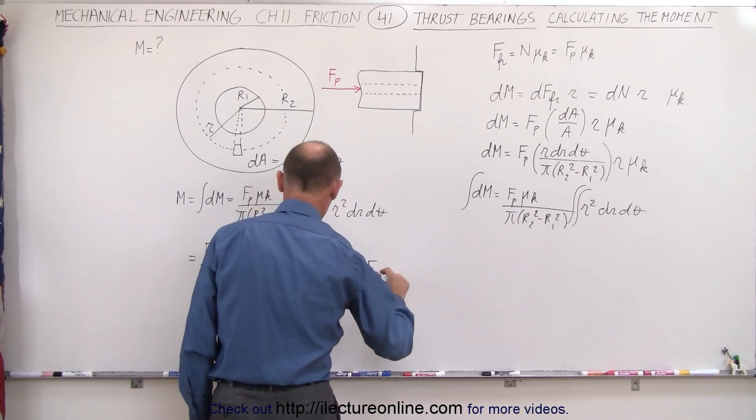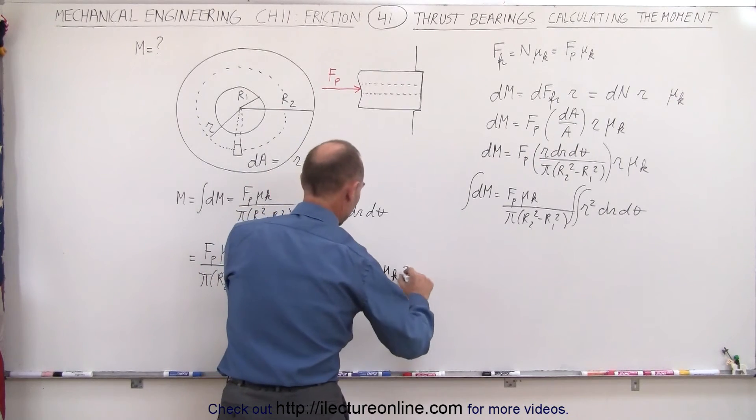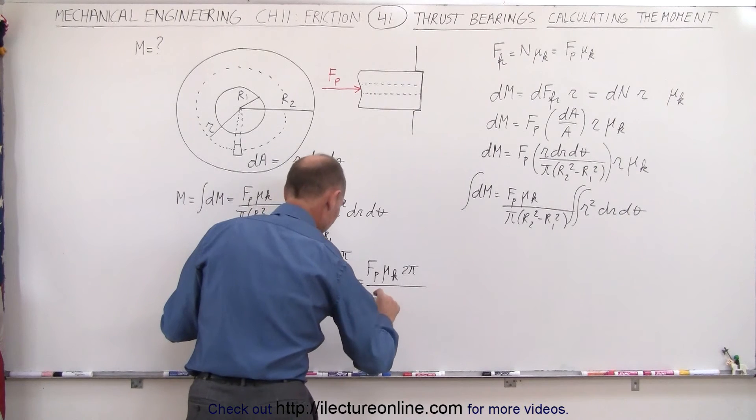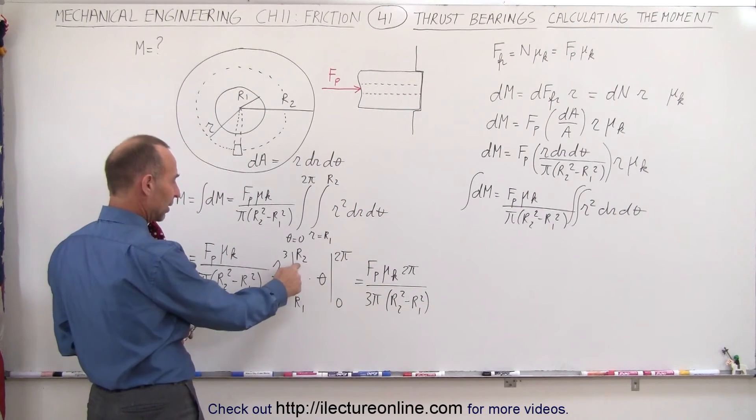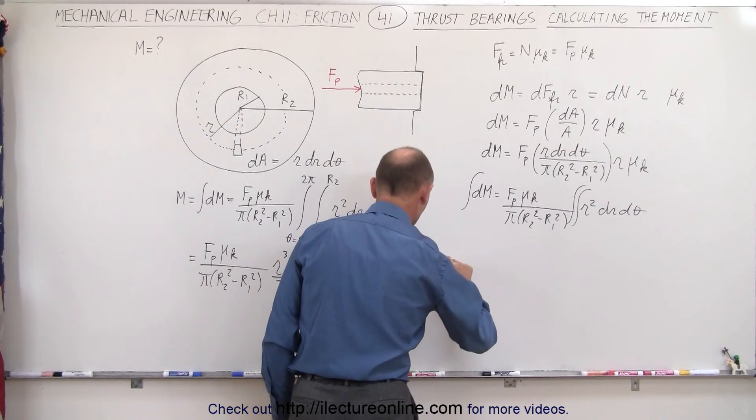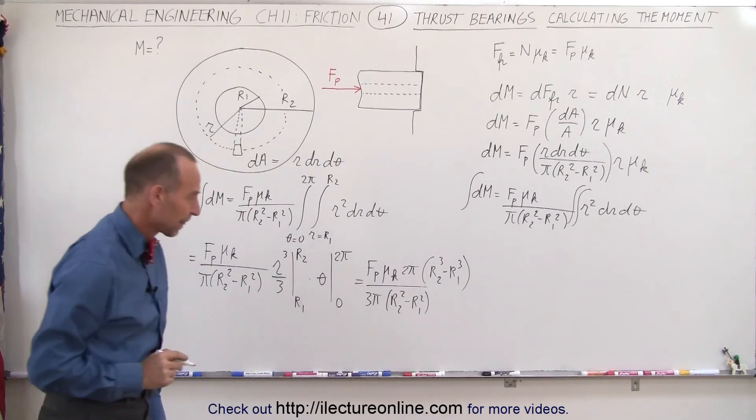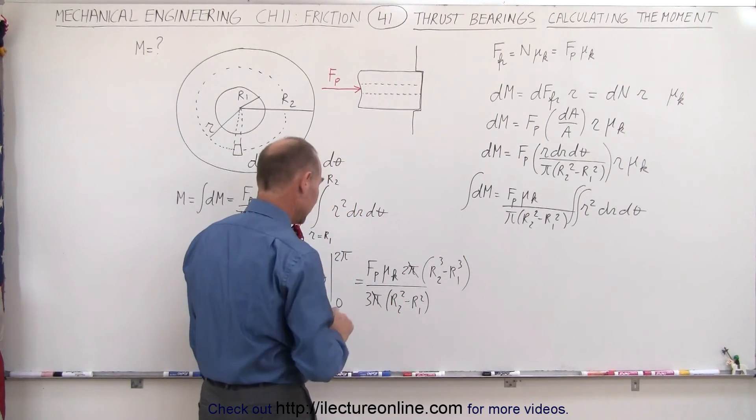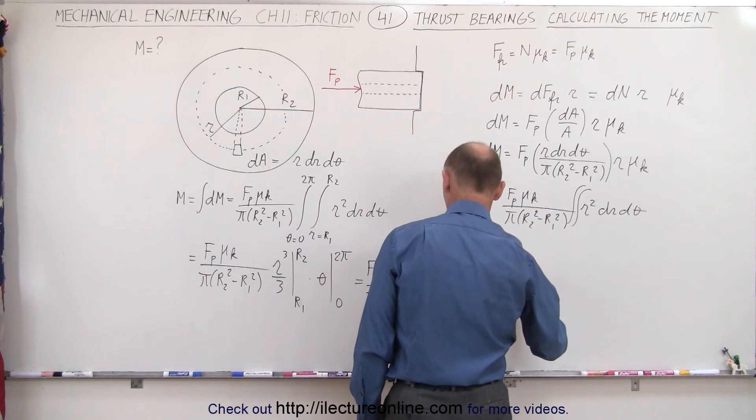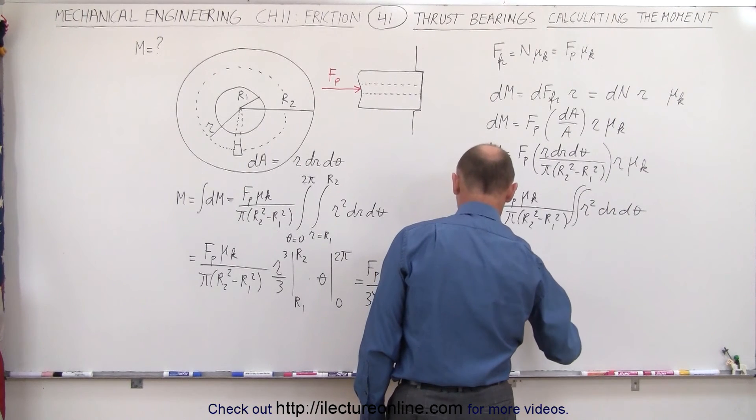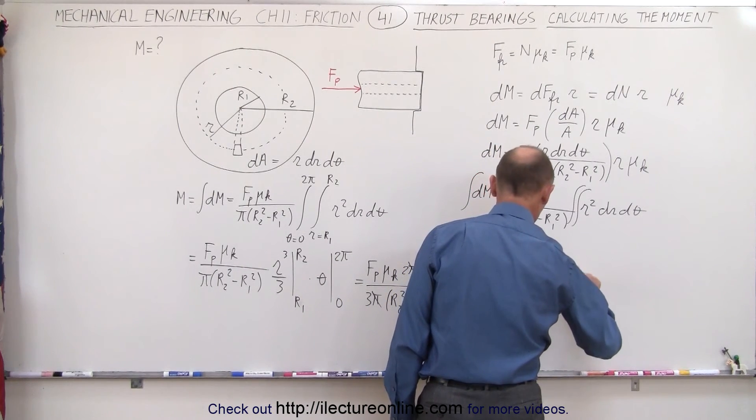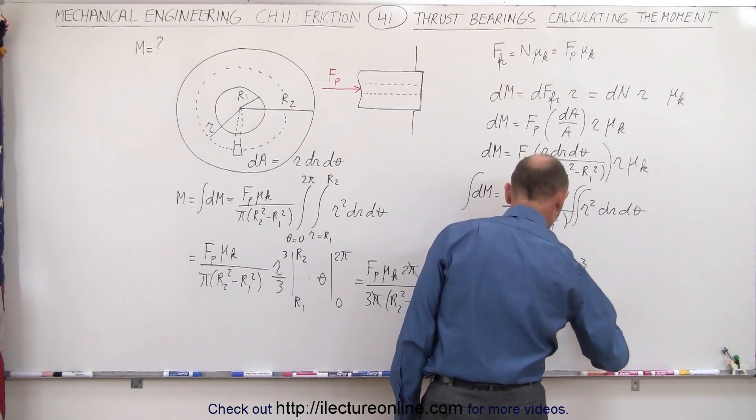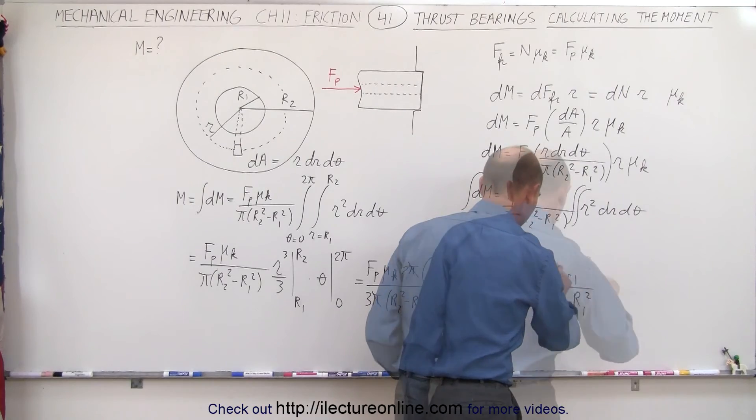We get f sub p mu sub k, we get a 2 pi in the numerator here, divided by, we get a 3 pi times r2 squared minus r1 squared. We have all that, and then I still have to plug in the upper lower limit for r cubed, so in the numerator we'll get r sub 2 cubed minus r sub 1 cubed. There we go. And then we can simplify this a little bit, we can get rid of that, we can get rid of that, and in other words, this then becomes equal to 2 thirds, f push times mu sub k times, in the numerator we get r sub 2 cubed minus r sub 1 cubed, divided by r sub 2 squared minus r sub 1 squared. Let me write that a little bit better. There we go.